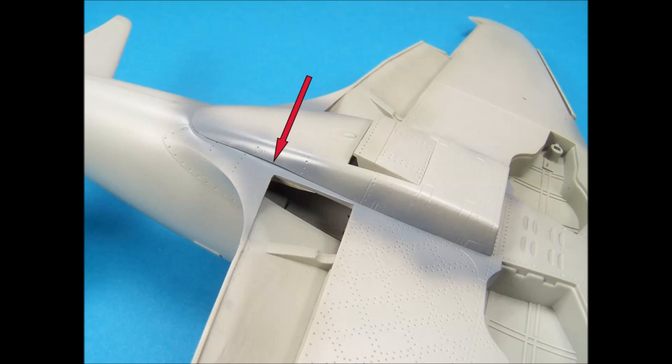Some voids are in very hard to reach places that are difficult to fill, like the underside of this MiG-3. In these cases, first airbrush flat paint primer around the area of the void.